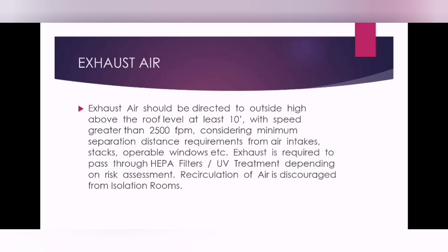Exhaust air should be directed outside, high above the roof level — at least 10 feet above the roof or above the hospital facility — so it will not re-enter other rooms or be drawn in by other AHUs. The exhaust speed should be greater than 2500 feet per minute (FPM), and minimum separation distance requirements from air intakes, operable windows, etc., must be maintained.